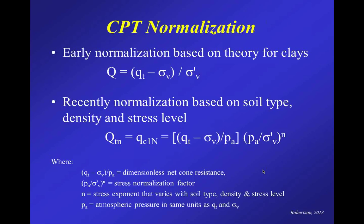For normalization, in clays the normalized cone resistance Q equals the net cone resistance divided by vertical effective stress, with stress exponent N = 1. In sands this doesn't work as well, so the more generalized form — QTN — is the net cone resistance divided by atmospheric pressure, multiplied by (atmospheric pressure / vertical effective stress)^N. In sands, N tends to be less than one, often around 0.5. This is related to the QC1N value normalized to one atmosphere used in SBTN analysis.